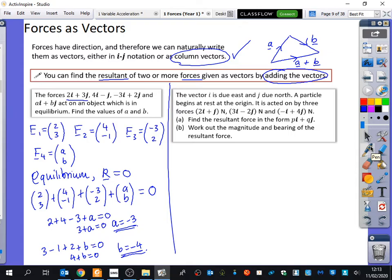This question is now going to be telling us a bit more about the directions. It says the vector I is due east. So we're saying that I is going east. Well, that's good. And the vector J is due north. That's also good because that's the usual direction that we would draw them. So let's assume a particle begins at rest at the origin. It is acted on by three forces that we've got here, here, and here. And we're going to try and find out the resultant force by adding them together.